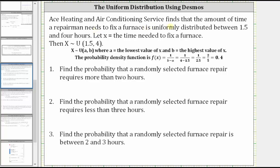ACE Heating and Air Conditioning Service finds that the amount of time a repairman needs to fix a furnace is uniformly distributed between 1.5 and four hours. Because we have a uniform distribution, we use this notation where 1.5 is the lowest value of x and four is the highest value of x, which are the repair times in hours for repairing a furnace.